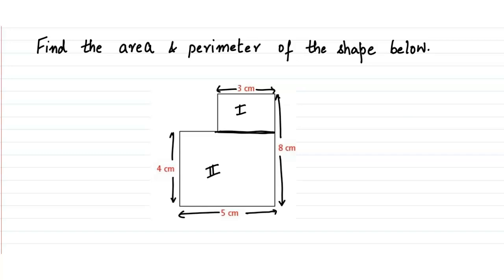Now if you look at the first rectangle, this side should be equal to this side, so we come to know that this much is three centimeters. And now if you look at this side and the second rectangle, this is the green side.